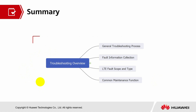In summary, for the troubleshooting overview, we have introduced the general troubleshooting process, followed by fault information collection. We also discussed LTE fault scope and type, and lastly, common maintenance functions. That's all from me. Hope you enjoyed the session. Thank you, and have a nice day.